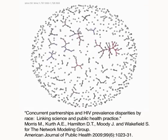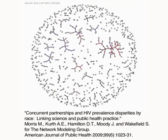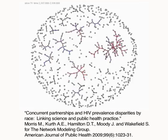While concurrency is rare, we found that on average, a 5% daily prevalence of concurrency doubled epidemic potential compared to a population with the same number of monogamous partnerships.